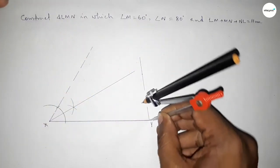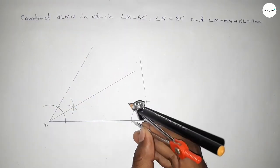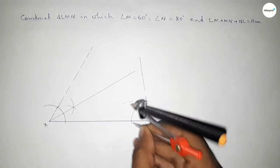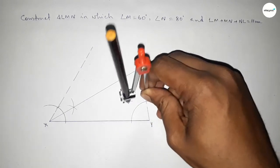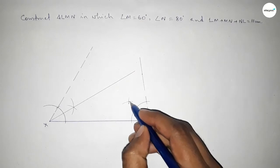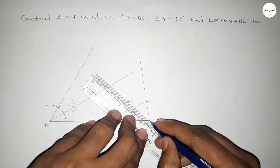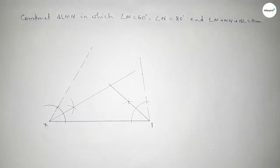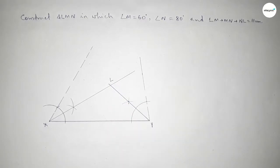Next, bisecting the 80 degree angle at Y. Putting the compass and taking any length, drawing an arc. With the same length, putting the compass at the intersections and cutting arcs so both curves intersect at a point. Joining this line bisects the 80 degree angle. Both bisector lines intersect at a point — we take this as point L.